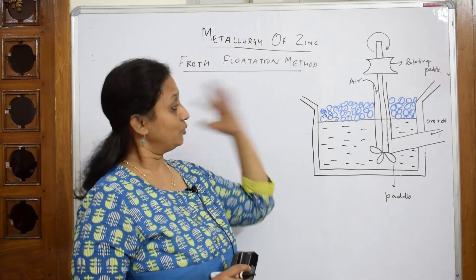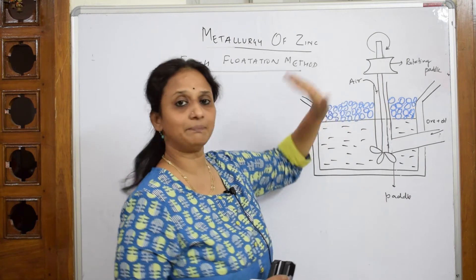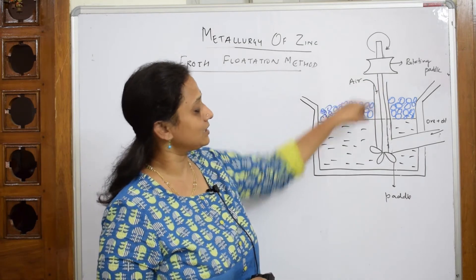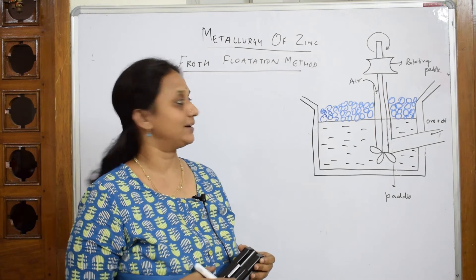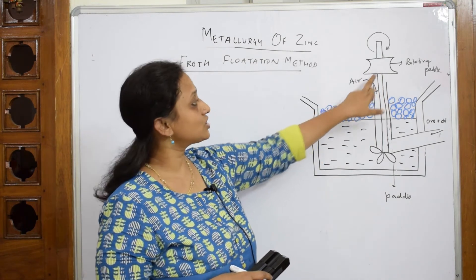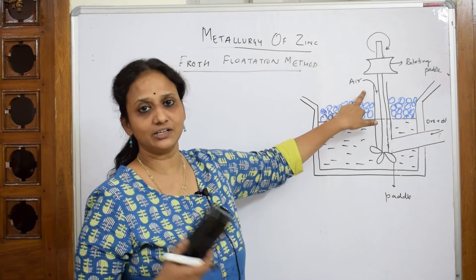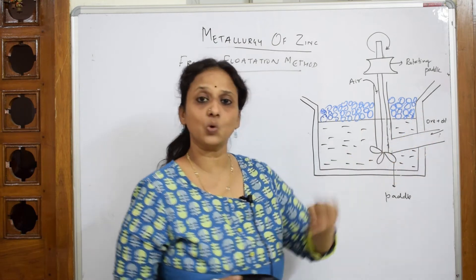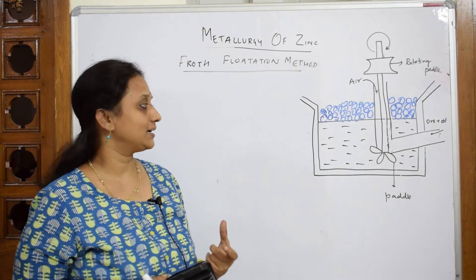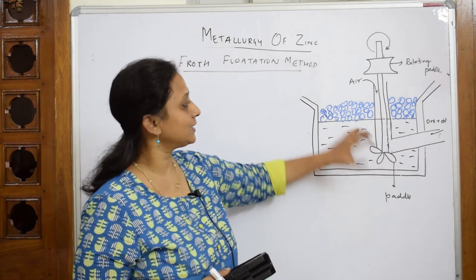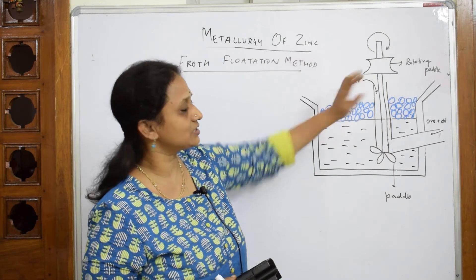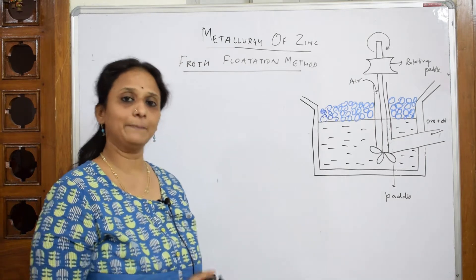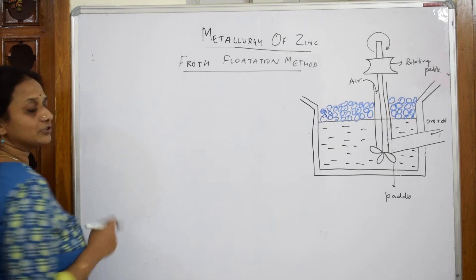The most important thing in the froth flotation tank is a rotating paddle. This rotating paddle continuously keeps rotating whatever ore we have added. High-pressure air is always circulated into the rotating paddle. From one side of the rectangular vessel we introduce ore and oil. As this air enters the tank, the rectangular paddle keeps rotating at high speed, and we will see what happens inside the tank.